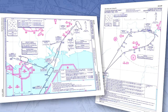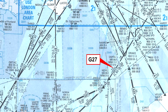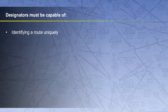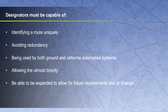ATS routes are identified by their own designators. The purpose of this system of designators for ATS routes and RNP types is to allow both pilots and ATS to make unambiguous reference to any ATS route without the need to resort to geographical coordinates or other means; to relate an ATS route to a particular vertical structure of the airspace; to indicate a required level of navigational performance accuracy. The designators themselves must be capable of identifying a route uniquely, avoiding redundancy, being used by both ground and airborne automated systems, allowing the utmost brevity, and expanding to allow for future requirements or change.